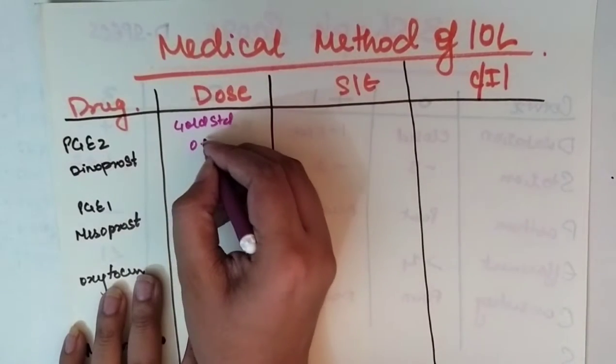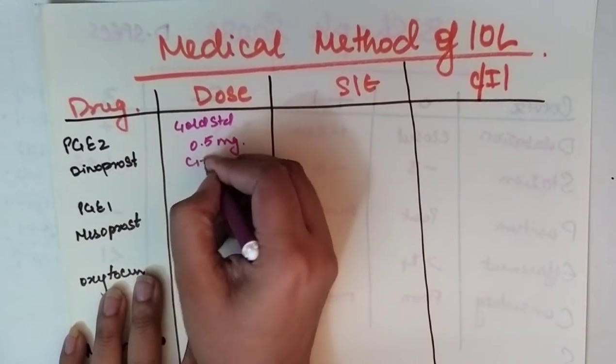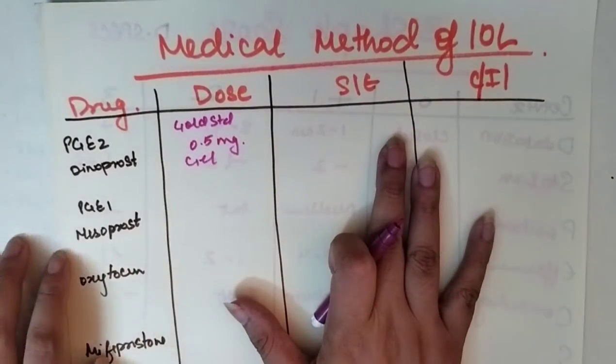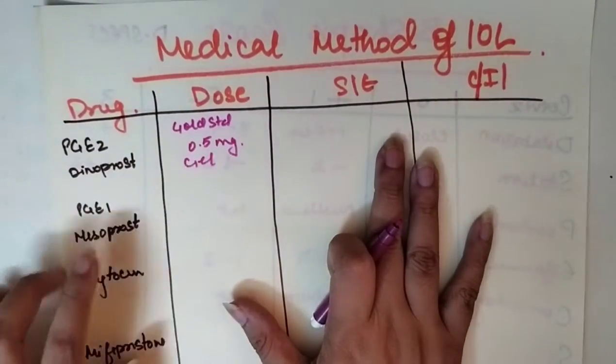It is used in 0.5 mg gel formulation. There are not much side effects, that's why it is gold standard.